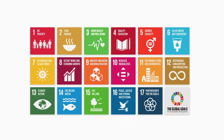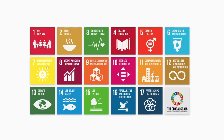Number three, Good Health and Well-Being — ensure healthy lives and promote well-being for all at all ages. Number four, Quality Education — ensure inclusive and quality education for all and promote lifelong learning, which is critical given the way technology is moving. Number five, Gender Equality — achieve gender equality and empower all women and girls. Number six, Clean Water and Sanitation — ensure access to water and sanitation for everybody on the planet. Number seven — ensure access to affordable, reliable, sustainable, and modern energy for all.